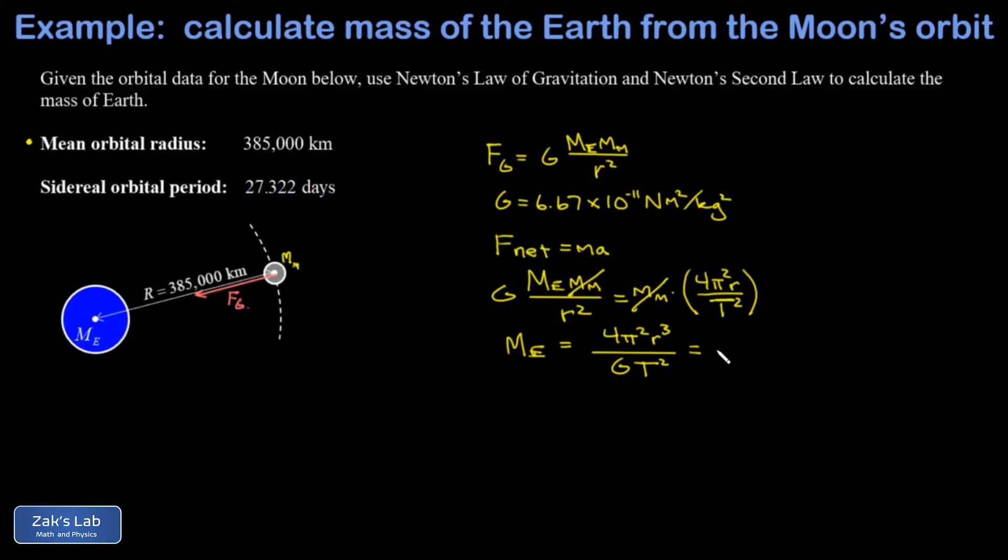And we're almost ready to get the mass of the Earth out of this, but we have to do some unit conversions first. So first of all, the orbital radius needs to be converted to meters. Shifting the decimal place on the orbital radius, I have 3.85 × 10⁵ kilometers. This needs to be converted to meters, which gives you three more factors of 10, and I get 3.85 × 10⁸ meters.